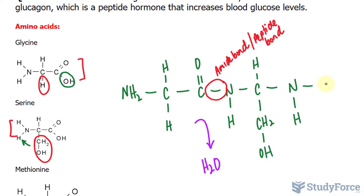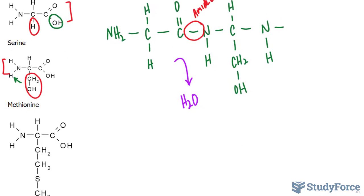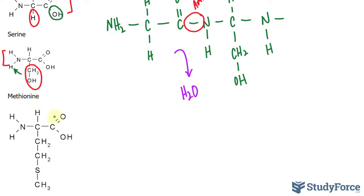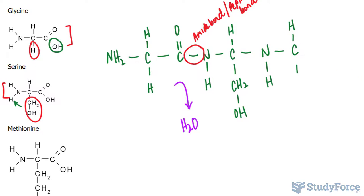Let's continue drawing this. So our nitrogen is bonded to—I'm looking here for reference—the carbon of methionine, the hydrogen, its R group...